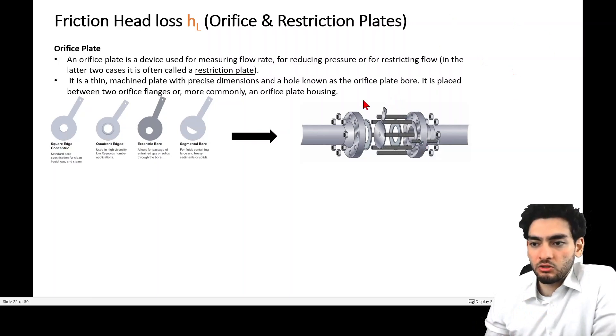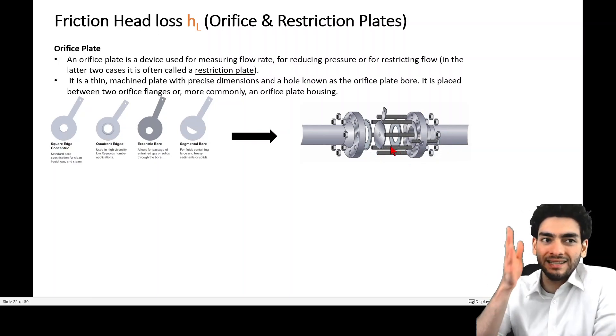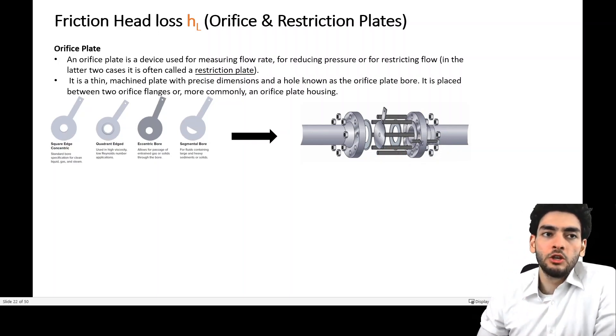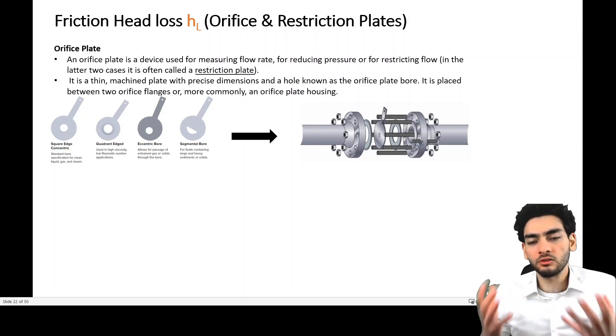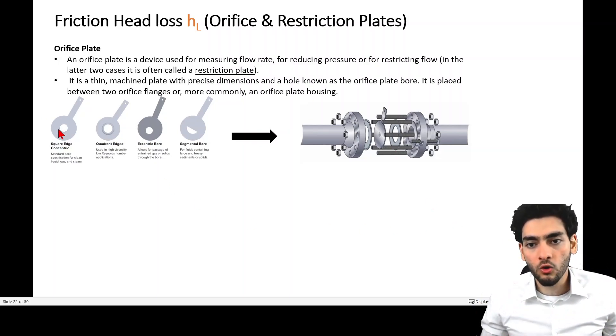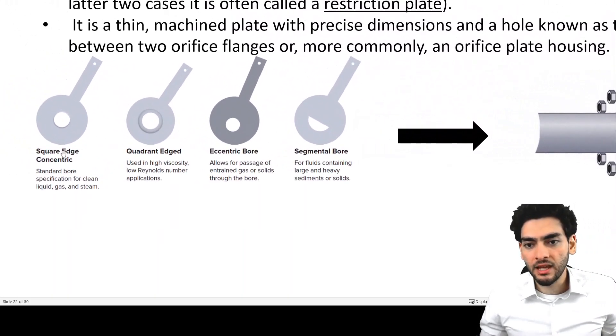As you can see in this picture, it's placed between two flanges with gaskets that the orifice plate sits between. As a process engineer, you would want to know how to calculate for the hole in the orifice plate. I'll show you the design equations in a second.